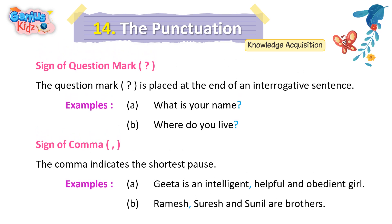Sign of Question Mark. The question mark is placed at the end of an interrogative sentence. Examples: A. What is your name? B. Where do you live?